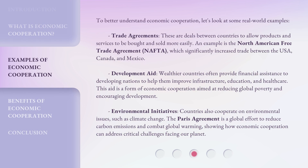To better understand economic cooperation, let's look at some real-world examples. Trade agreements are deals between countries to allow products and services to be bought and sold more easily. An example is the North American Free Trade Agreement, NAFTA, which significantly increased trade between the USA, Canada, and Mexico. Development aid: wealthier countries often provide financial assistance to developing nations to help them improve infrastructure, education, and healthcare. This aid is a form of economic cooperation aimed at reducing global poverty and encouraging development.